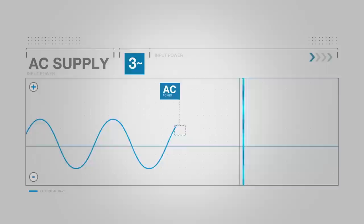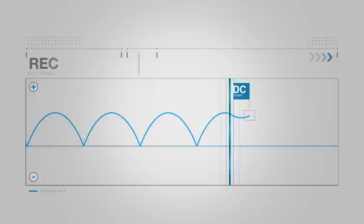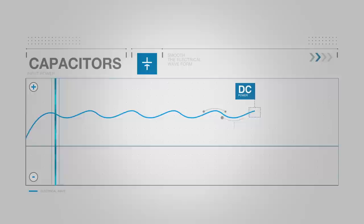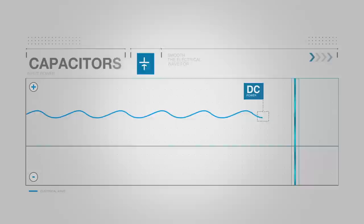Inside the drive, the input power is run through a rectifier that converts the incoming AC power to DC power. The DC power is fed into capacitors inside the drive. This is done to smooth out the electrical waveform, which provides a clean power supply for the next step.